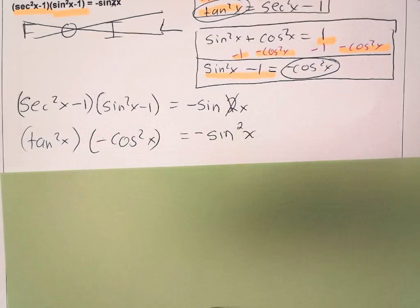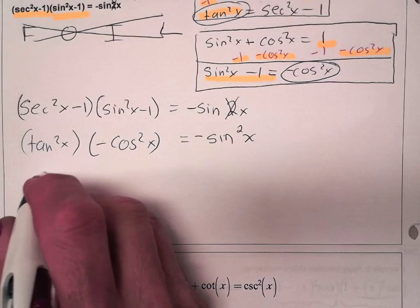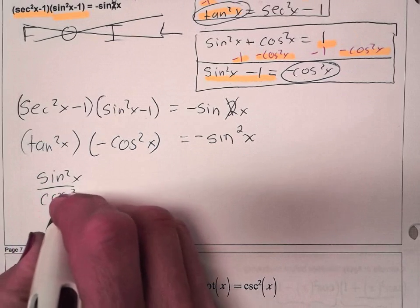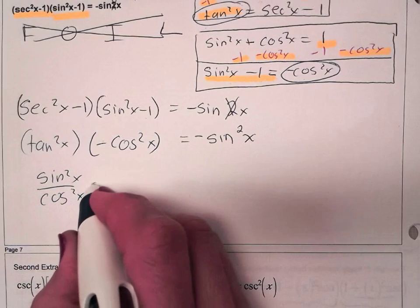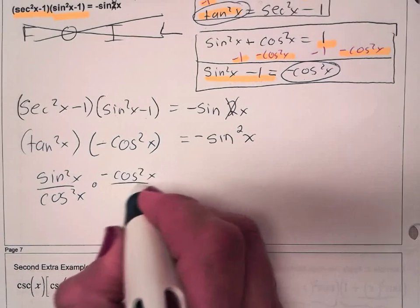Now we're going to rewrite tangent using the quotient identity, sine over cosine. So sin²x over cos²x, multiply that by -cos²x over 1.